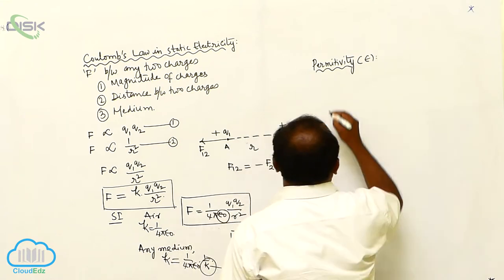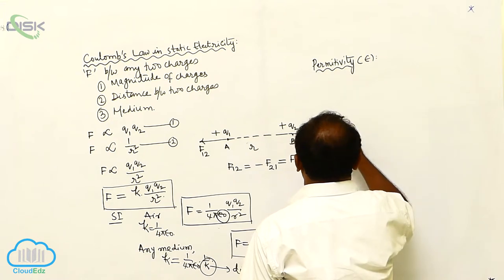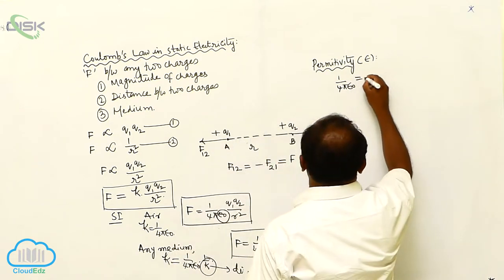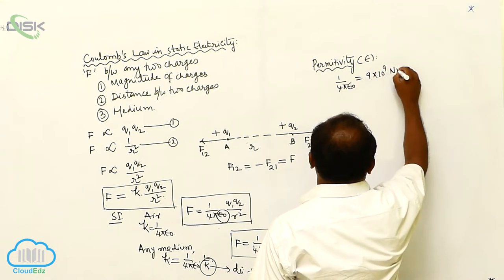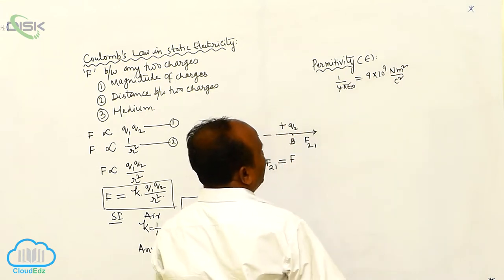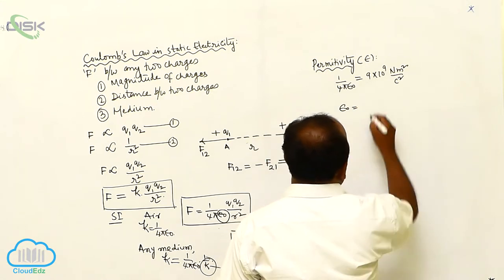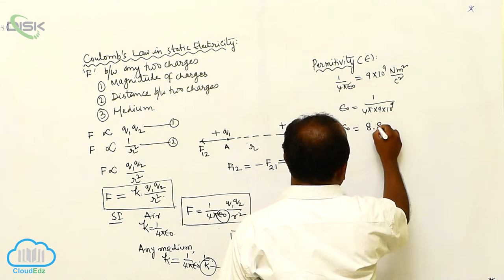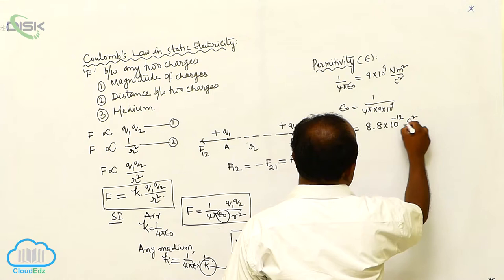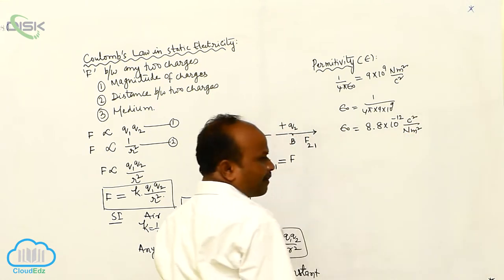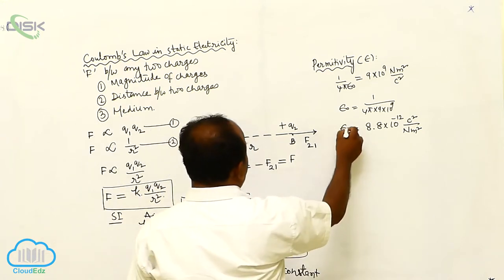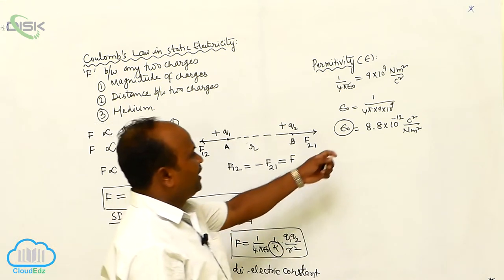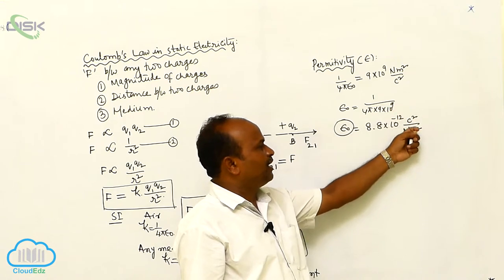For air or vacuum, the electrical permittivity is represented by epsilon naught. We already know that 1 by 4 pi epsilon naught equals 9 into 10 to the power of 9 newton meter square by coulomb square. The value of electric permittivity epsilon naught is 8.8 into 10 to the power of minus 12 coulomb square by newton meter square.